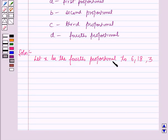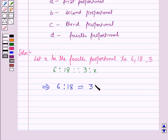This means 6 is to 18 as 3 is to x. This implies 6:18 = 3:x.